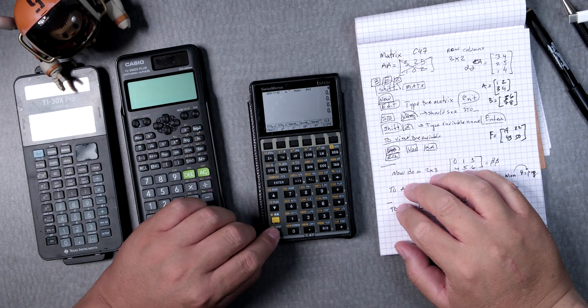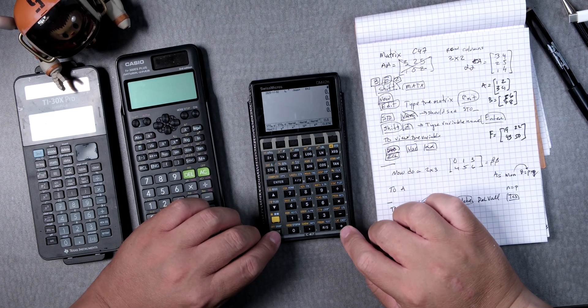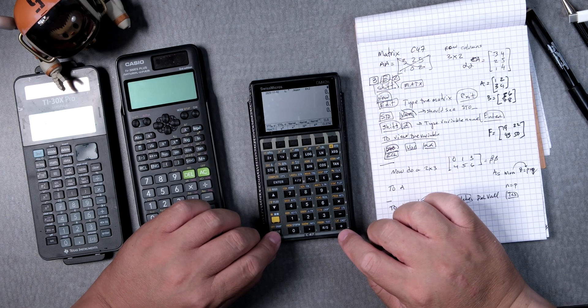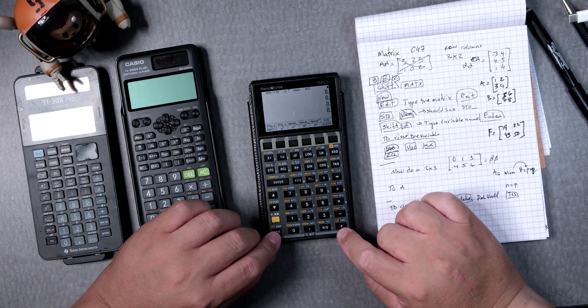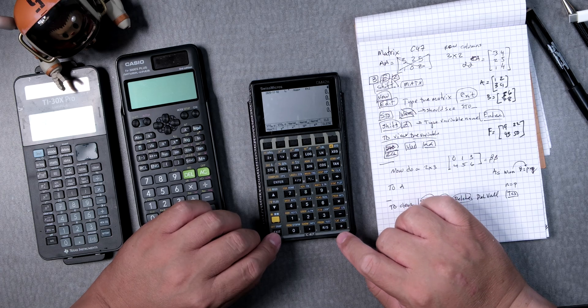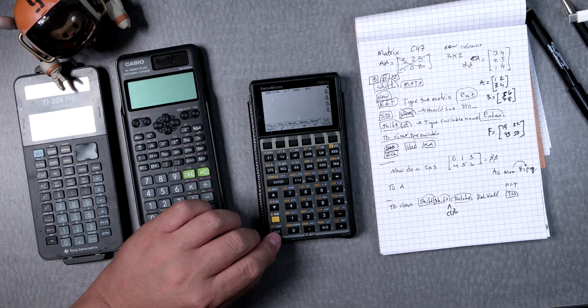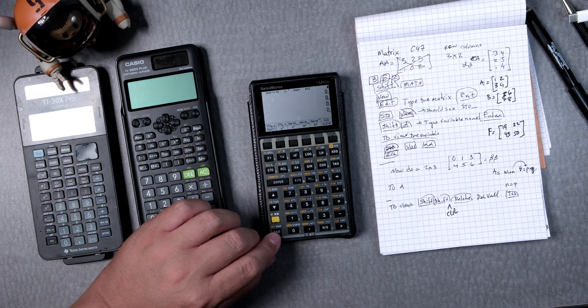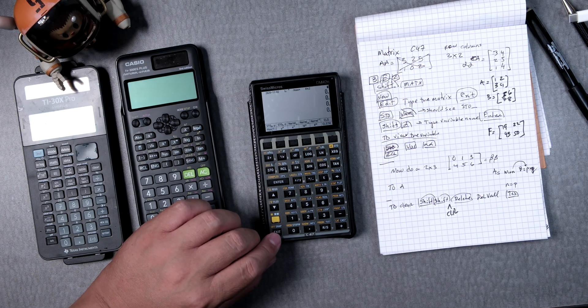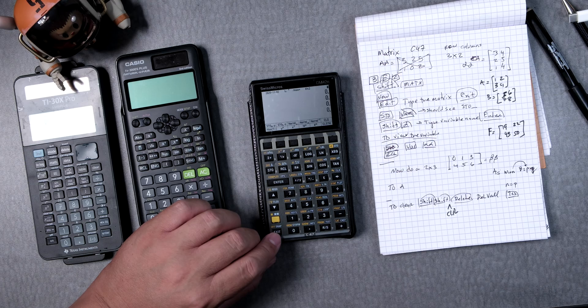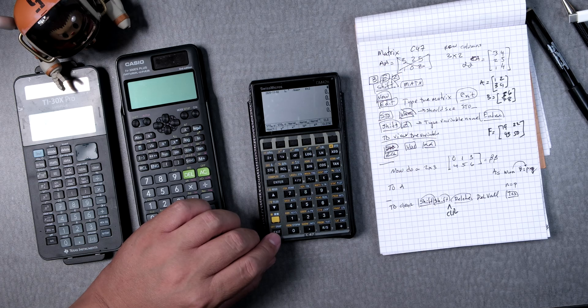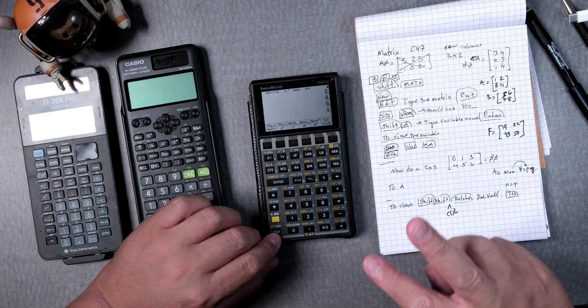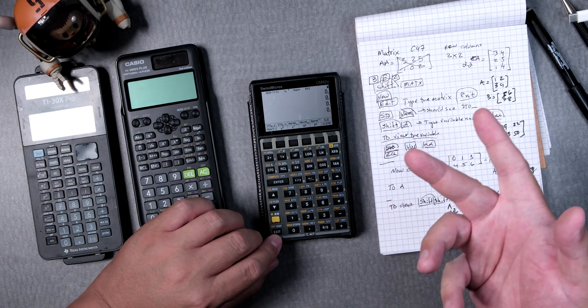Welcome back everyone. We have the C47 installed in a Swiss Micros DM42N. What I want to do is multiply two matrices. We're going to enter two matrices and store those so we can do other operations. The idea is two matrices and then we're going to multiply them.